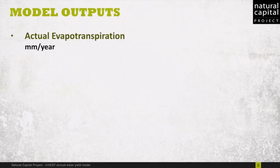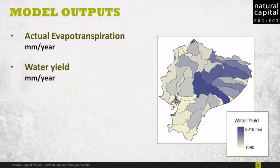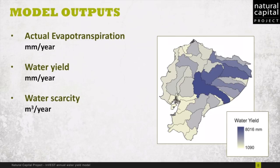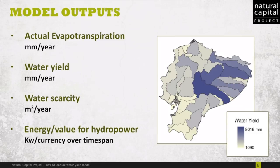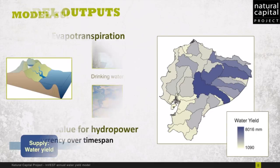The main model outputs include actual evapotranspiration, which is the amount of water that is lost each year, expressed in millimeters, and water yield, also expressed in millimeters, which is the amount of water that runs off of the landscape each year. If you input data on water demand, the model will also output a map of water scarcity, which is the water yield minus the amount of water used in the basin. And if you choose to do valuation, the net present value of hydropower production will be calculated based on water scarcity and economic data inputs.